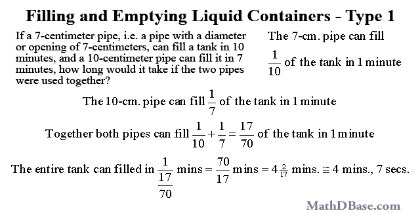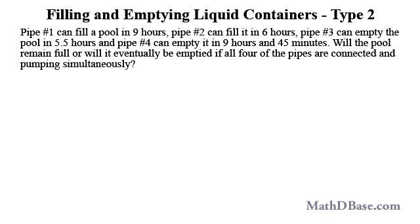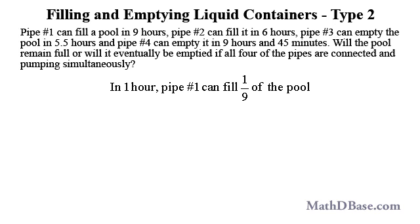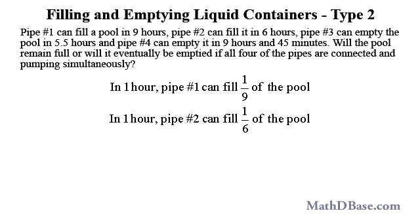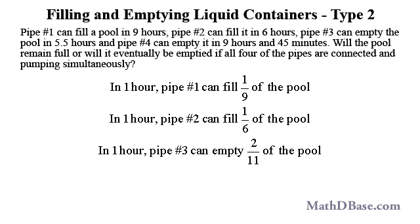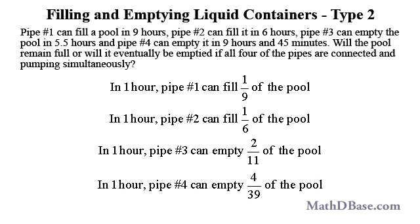For the second type: pipe one fills a pool in 9 hours, pipe two fills it in 6 hours, pipe three empties it in 5.5 hours, and pipe four empties it in 9 hours and 45 minutes. Will the pool remain full or be emptied if all four pipes operate simultaneously? In one hour, pipe one fills 1/9, pipe two fills 1/6. Since 5.5 equals 11/2, pipe three empties 2/11 of the pool per hour. Since 9 hours 45 minutes equals 39/4 hours, pipe four empties 4/39 of the pool per hour.